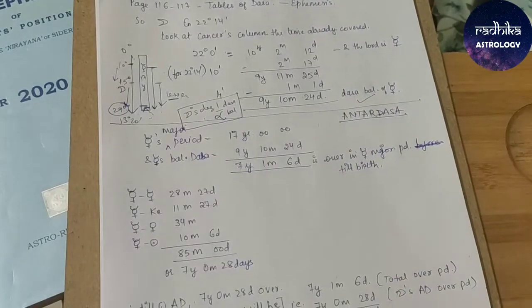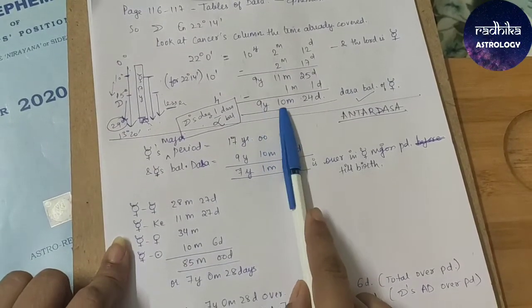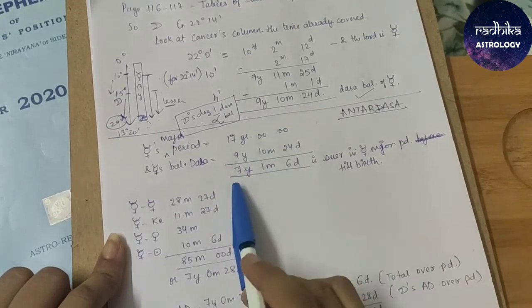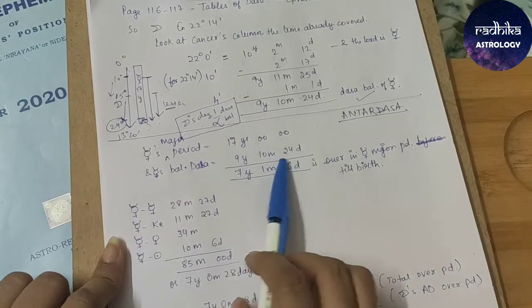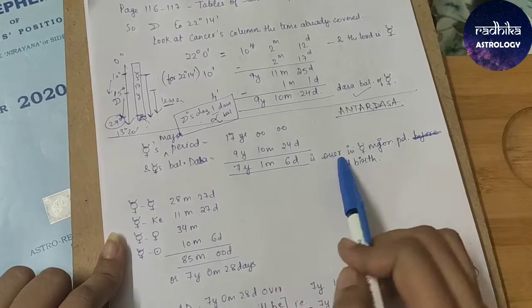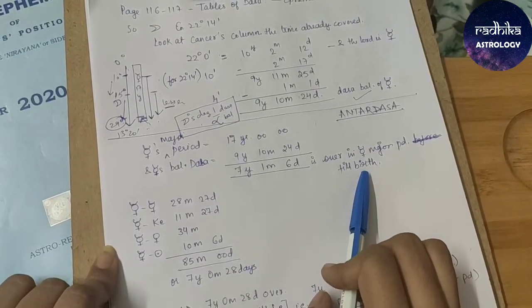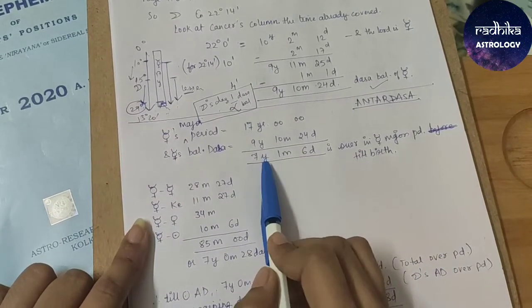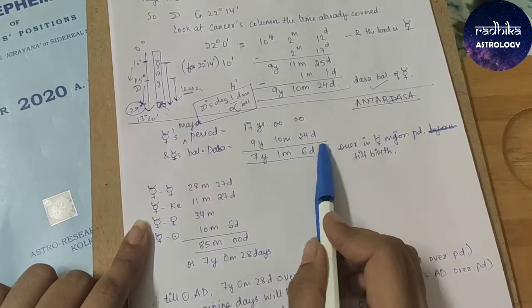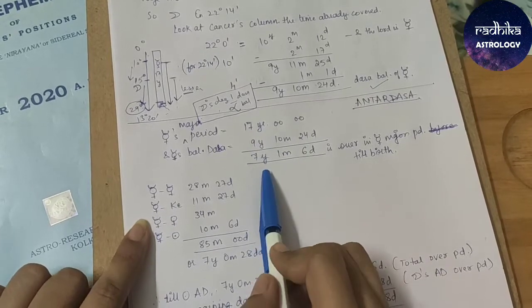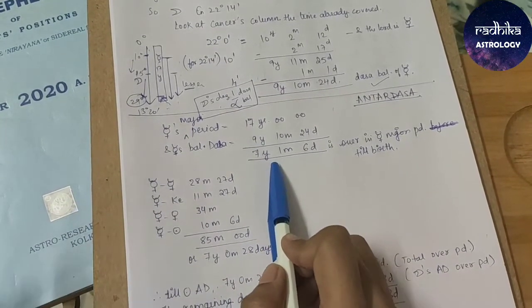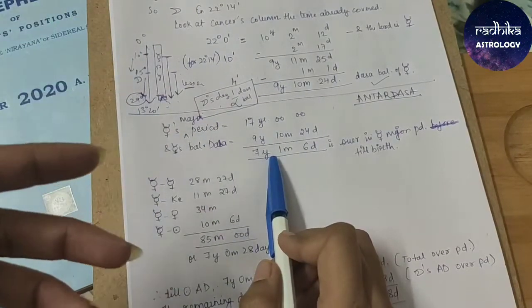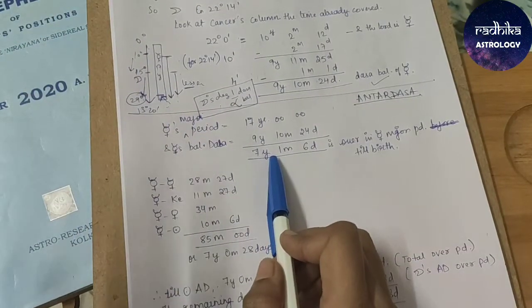Here already we know, 9 years was the balance. That means, how much Mercury dasha is over has to be calculated. How much is over? Out of 17 years, 9 years and this is over. So, 7 year, 1 month, 6 days is over in Mercury major period till birth. It means, we have to calculate all those Antardasha lords till 7 years, 1 month, 6 days or nearby to this value. Around 7 years, what all the Antardasha lords were there who were over? Because 7 year is the over period, which has already been covered. Who were the Antardasha lords which have already been covered?